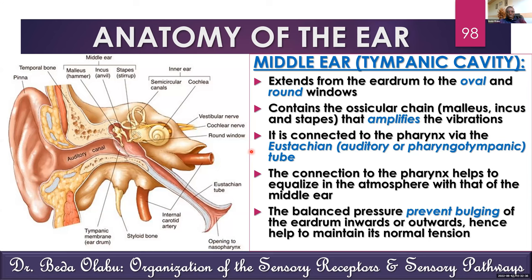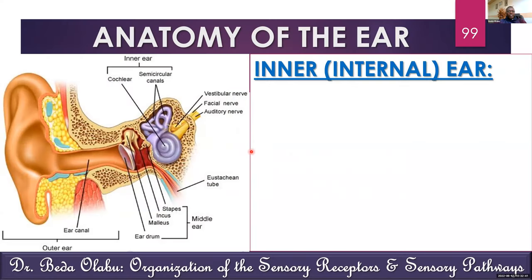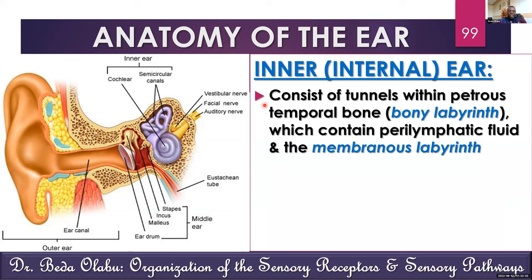Now we talk about the inner ear, which is a little complex. The inner ear consists of tunnels within the temporal bone. The part of the temporal bone that contains the inner ear is called the petrous temporal bone. The system of tunnels within the petrous temporal bone is termed the bony labyrinth.